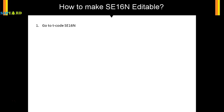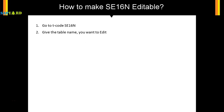First, go to tcode SE16N. Give the table name you want to edit. Type slash H on the command bar. Don't worry, we'll see this in the SAP screen just after this slide.